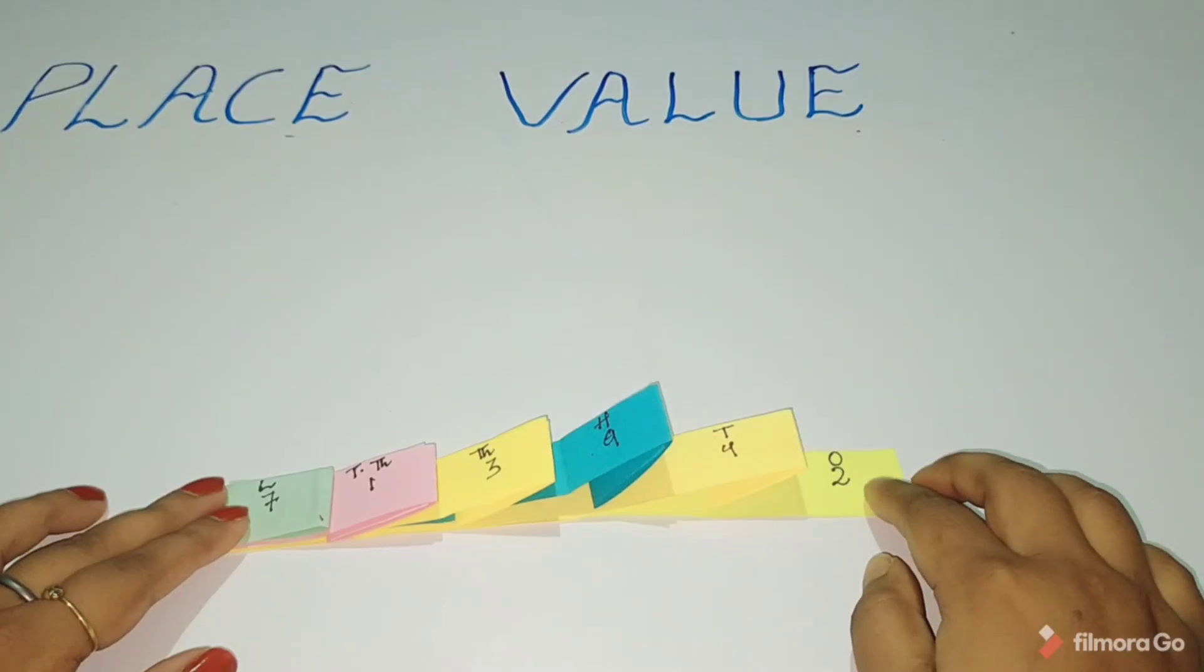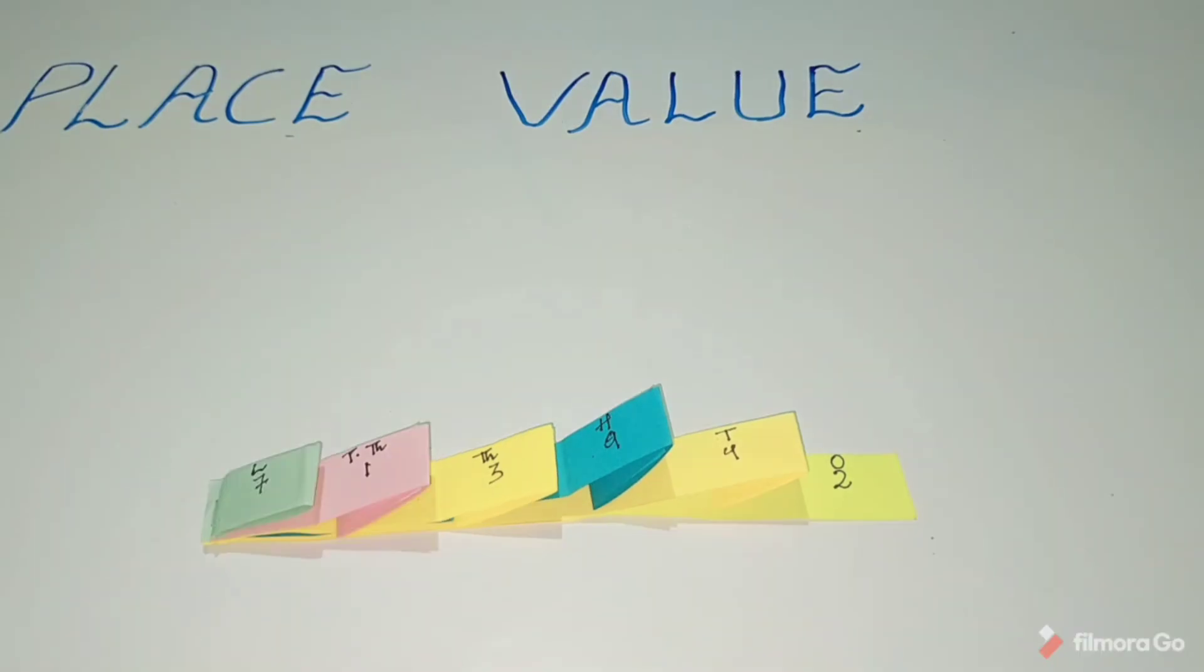In this way you can find out place values of different digits in a six-digit number. You can also find out place values of any digit number using this method. For example, if you want to find out place values for a seven-digit number, take seven paper strips and fold them into seven equal parts and follow the same rules.